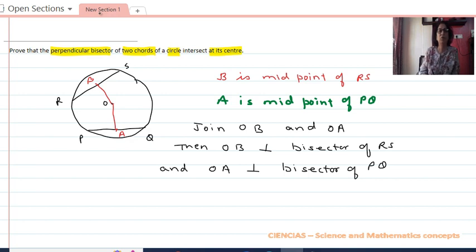But suppose if O is not the midpoint and we consider any other point O dash is the midpoint of the circle. Then join O dash B and O dash A.